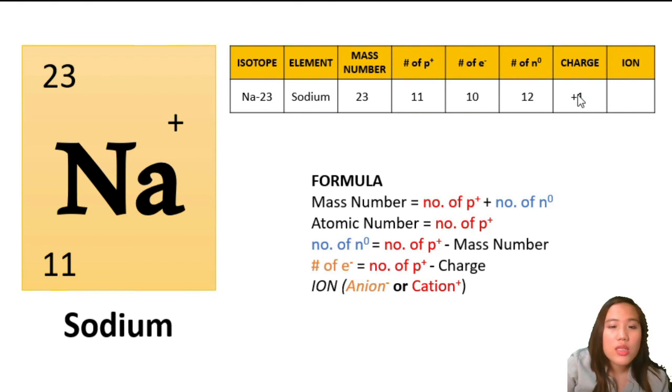Since our isotope or element is positive charge, what will be the type of ion? Is it anion or cation? Very good, we have the cation, because cation is the positively charged atom while anion is the negatively charged ion.